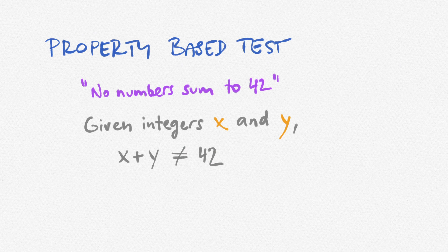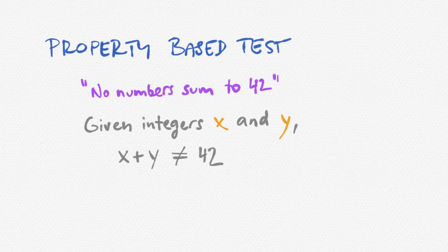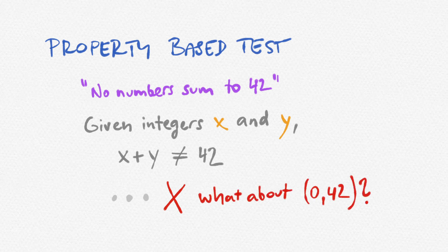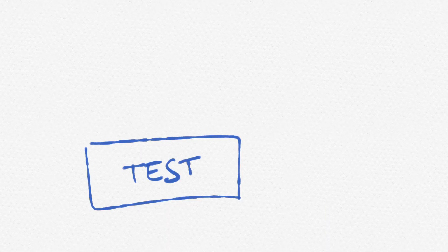Whereas in property based tests you describe what kind of input you want to test, for example pairs of integers, or a string of length at most 5, and the computer generates the values for you randomly. It also usually generates more than one of them, potentially a lot of them.